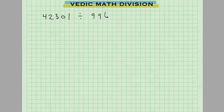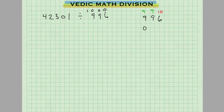Next problem: taking this number and dividing it by 996. This number 996 is close to base number 1000. Once again, we're going to do our all from 9, last from 10 formula to find the complement. 9 minus 9 is 0, 9 minus 9 is 0, and 10 minus 6 is 4. So the complement of 996 is 004, which is what we'll use to do the division work.